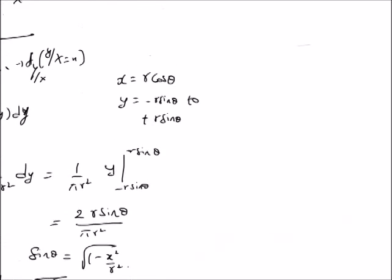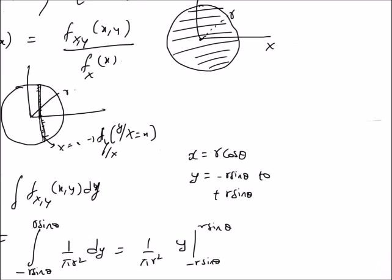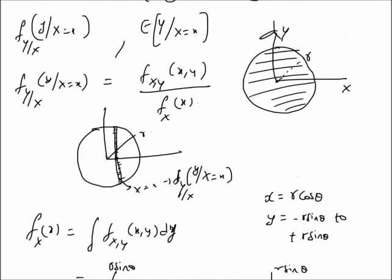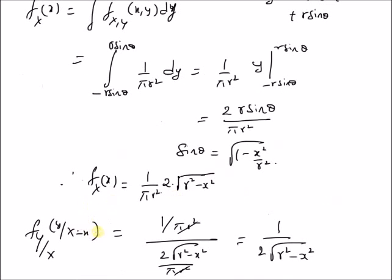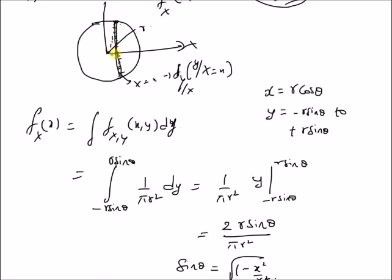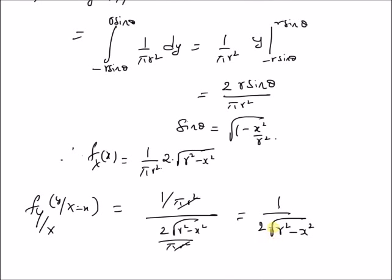We can verify this from the graphical representation. Since the joint PDF is uniform across the circle of radius R, the conditional PDF should also be uniform across the strip, with value equal to 1 divided by the length of the strip. The strip length is 2R sinθ = 2√(R² − x²), confirming that f_{Y|X} = 1 / (2√(R² − x²)).